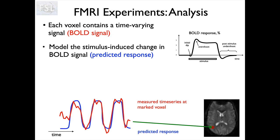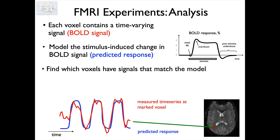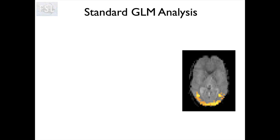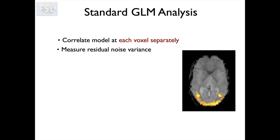That predicted response is going to be constructed within the software for you. What the analysis is going to do is look for voxels where there is a good match between this predicted response and the measured signal. If we have a good match, that implies there is activation related to the stimulus. The model we're going to use is the general linear model, or GLM. A standard GLM analysis for task fMRI correlates the model — matching the predicted response to the data — at each voxel separately. We come up with one predicted response, but we've got different time series at each voxel, so we're going to do this analysis separately at each voxel. For each voxel, we measure the residual noise — the difference between our fitted predicted response and the data — and then use that to form a T statistic.